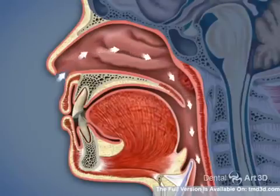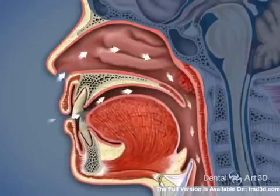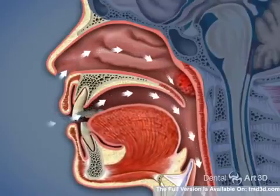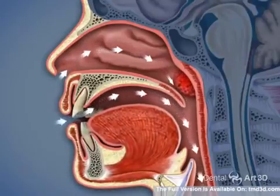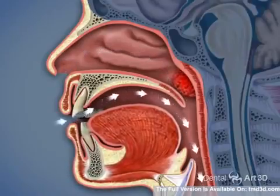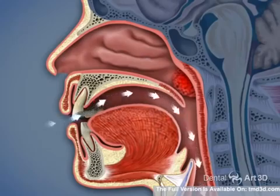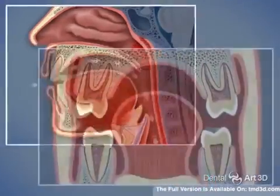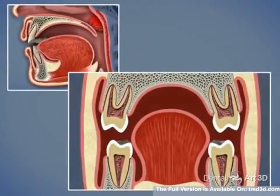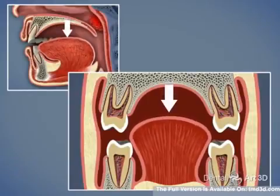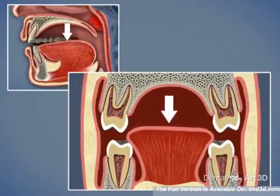As the tonsils and adenoids become swollen, they develop into an obstruction for nasal breathing, and slowly, mouth breathing begins to be the primary intake of air into the body. In order to breathe through the mouth, the lower jaw comes down, and the tongue comes off the palate and settles on the lower teeth.